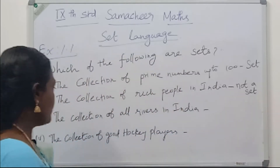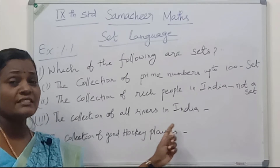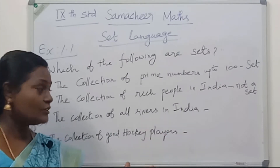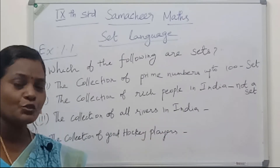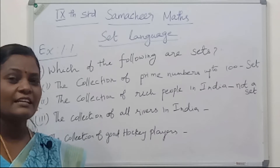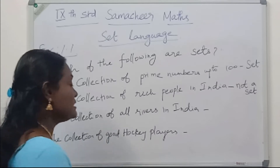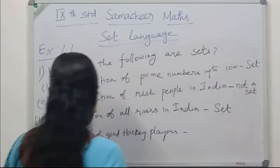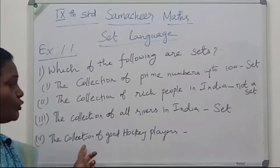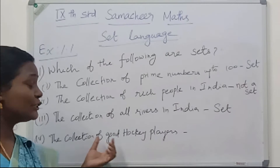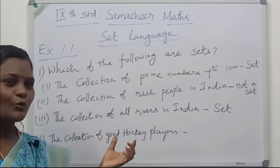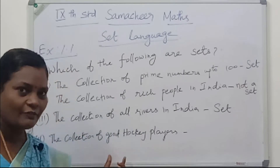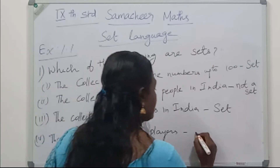See the 3rd one: the collection of all rivers in India. It is defined well — the rivers which are in India should come inside the set notation. So this is a set. See the 4th one: the collection of good hockey players. The word 'good' is not defined well — every player is good. So that we can say it is not a set.